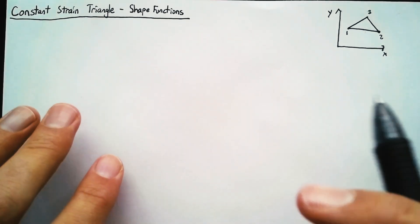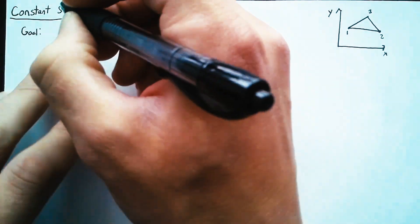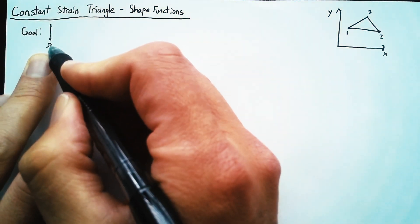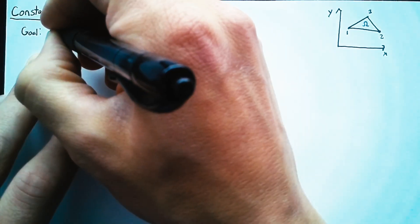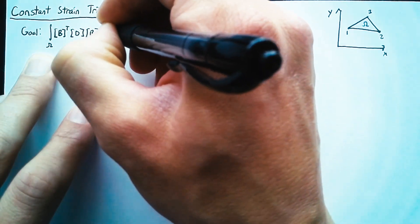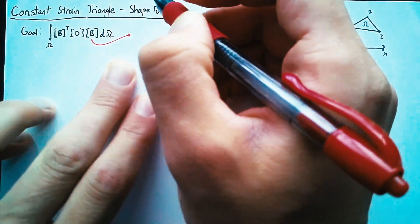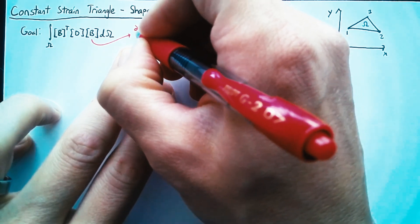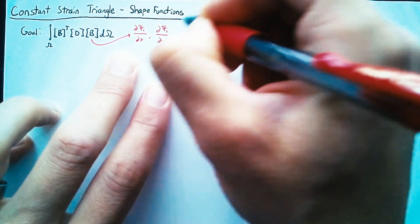Now if you recall, our goal is to define the stiffness matrix, which we had defined in a previous video as the integral over our element, which in this case is our omega. The integral is of B transpose dB d omega. The big thing here is that these B matrices are composed of derivatives of our shape functions with respect to x and y.